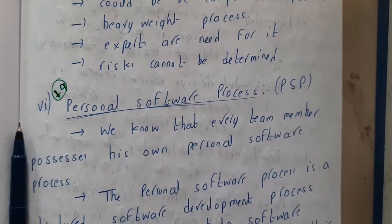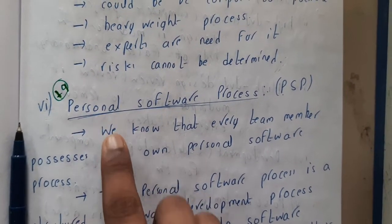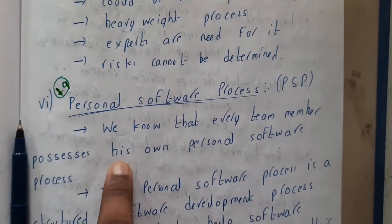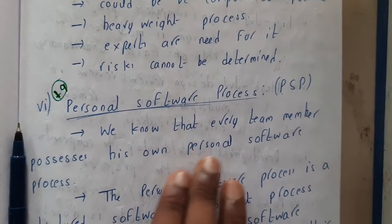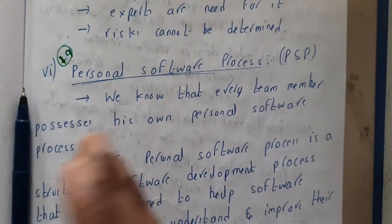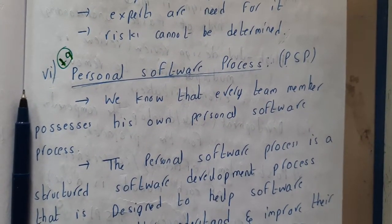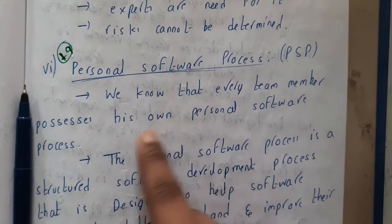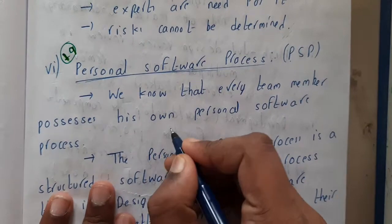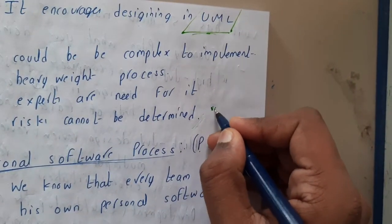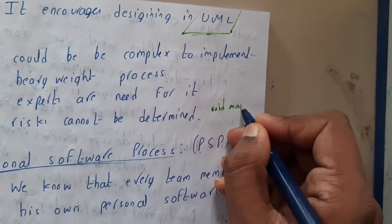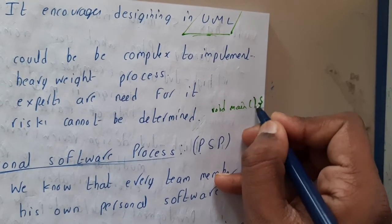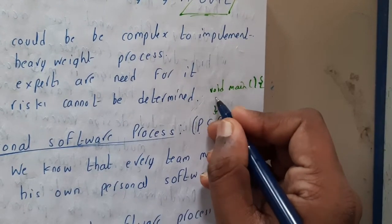It completely depends on you. Every team member possesses his or her own personal software process. Even if your higher authorities say you should do it a certain way, you will have your own rules. For example, in most coding practices they say that when writing a function, you need to start a curly bracket right after it and close it at the end, with statements written in between.